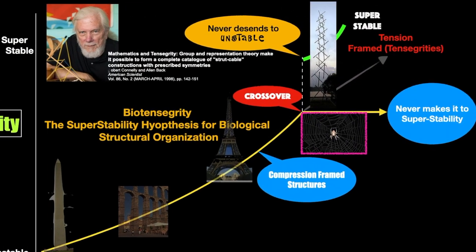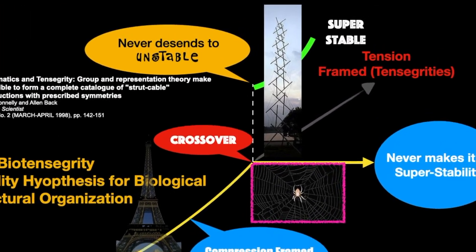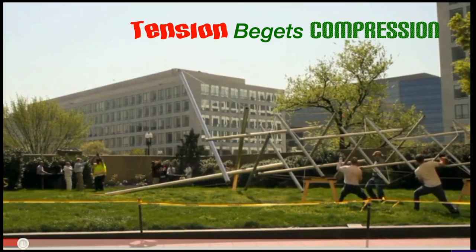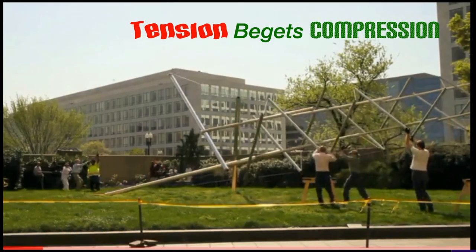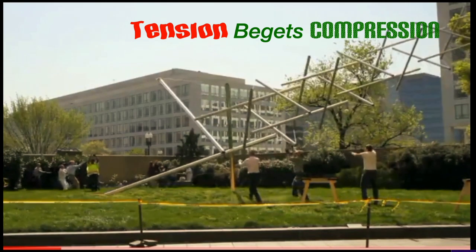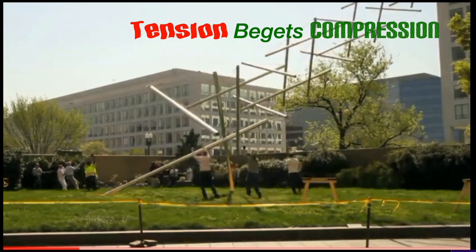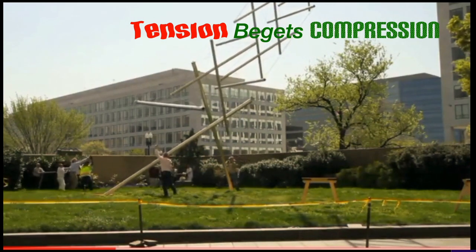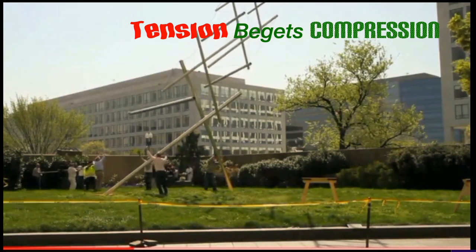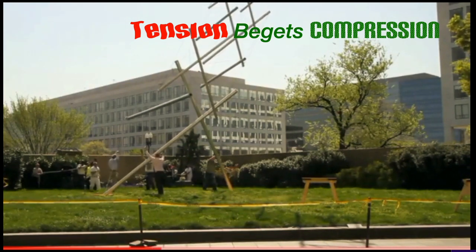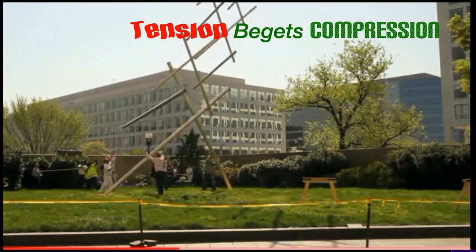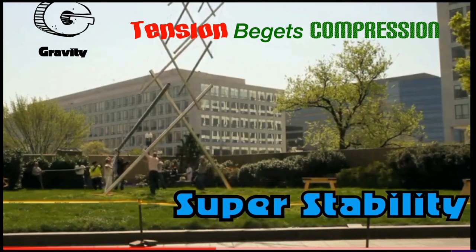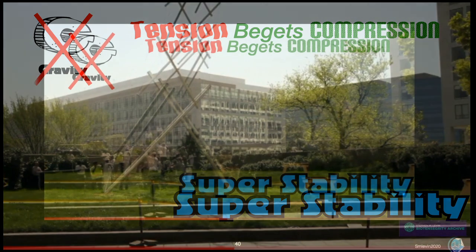This is Snelson's tensegrity tower being erected in the corner of the Hirshhorn Museum. It is being positioned in place by a few guys pulling on some wires and giving a little bit of a push. Tension is in the system before it's erected. Tension begets compression. Compression elements are independent of gravitational forces and it is mathematically superstable.